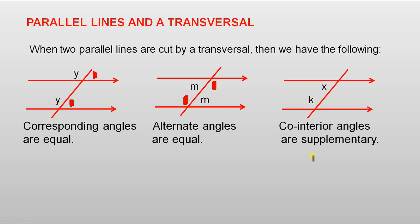And the co-interior angles are supplementary. So K and X are two co-interior angles. They are supplementary, which means they add up to 180 degrees.